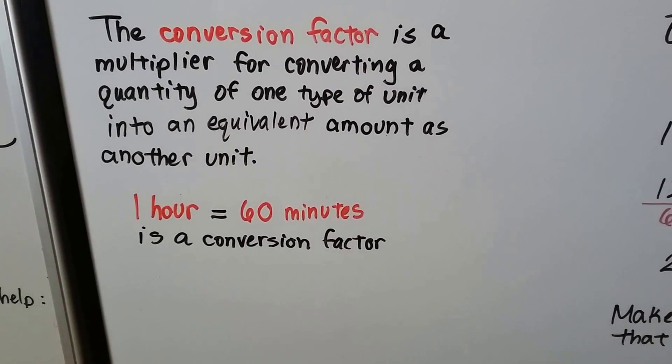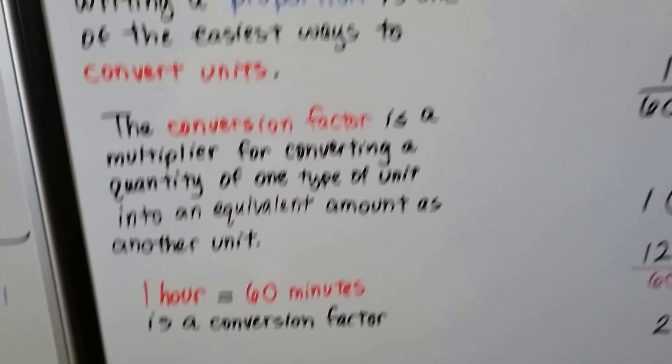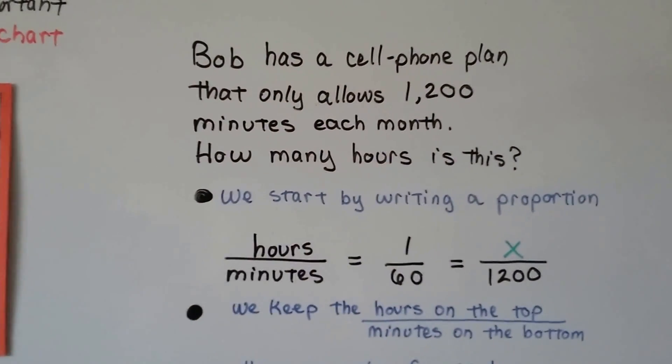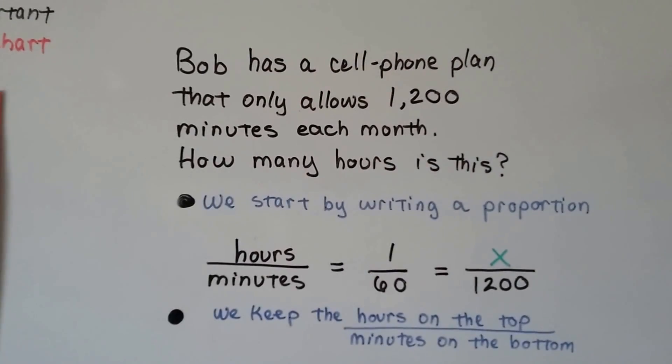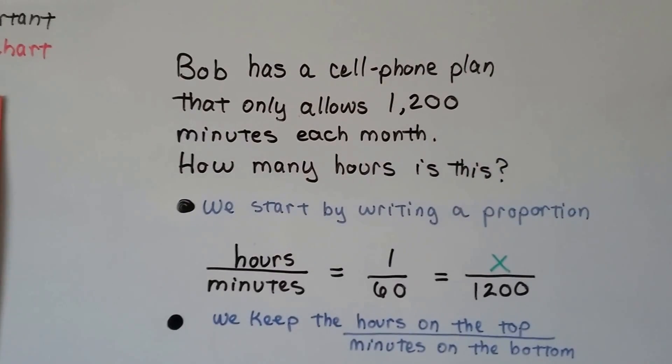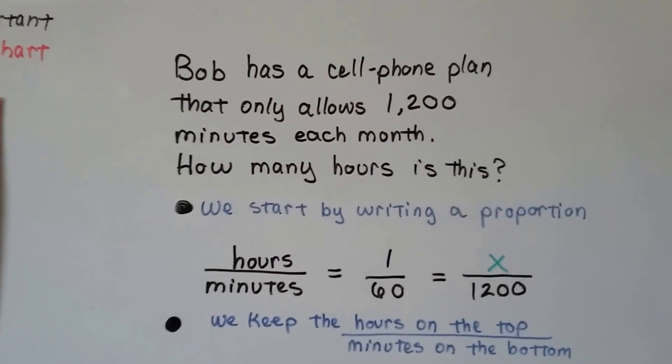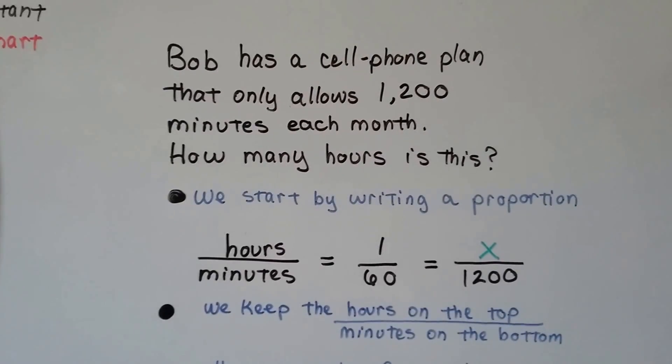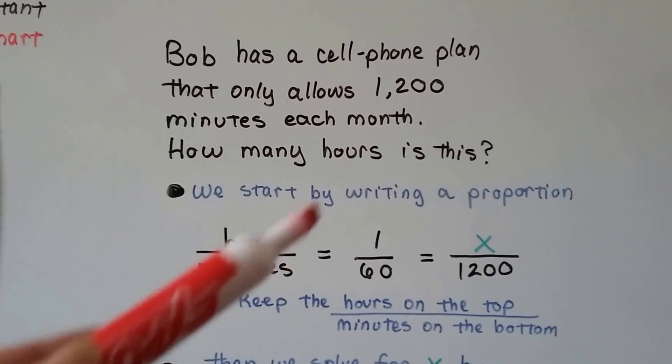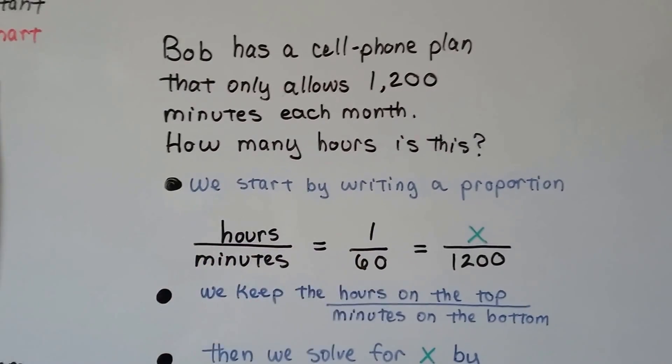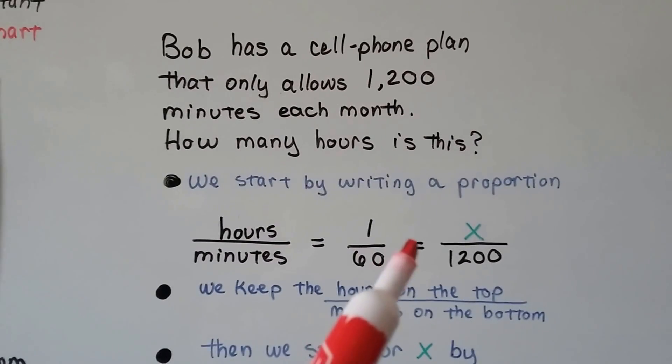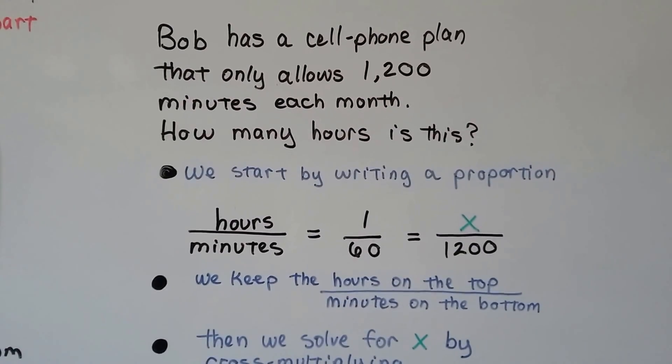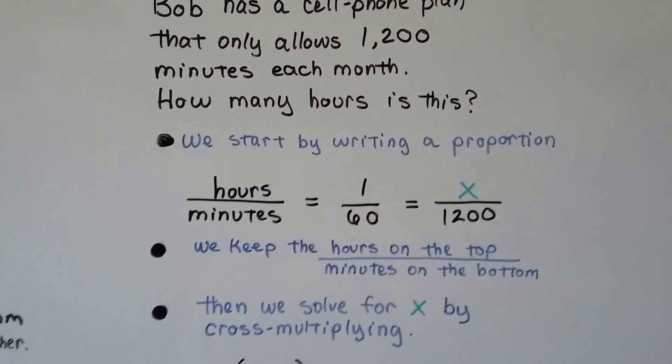One hour is equal to 60 minutes. That's a conversion factor. So take a look at this. Bob has a cell phone plan that only allows 1,200 minutes each month. How many hours is this? Well, we start by writing a proportion. Hours divided by minutes, and it's going to equal 1 over 60, because 1 hour is 60 minutes. And that's going to equal x divided by 1,200.